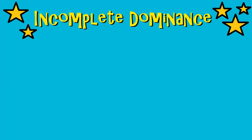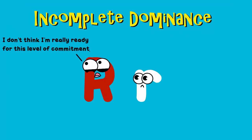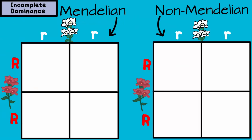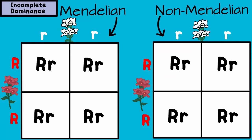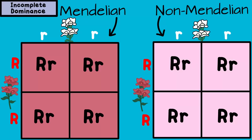It's called incomplete dominance. In incomplete dominance, the dominant allele is not completely expressed when the recessive allele is around. There isn't really a clear dominant allele. If you cross a red flower, represented as big R, big R, and a white flower, little r, little r, you are going to get offspring that are big R, little r. But unlike a Mendelian trait, that big R allele is not completely expressed when the little r is around. So big R, little r in this case is pink.